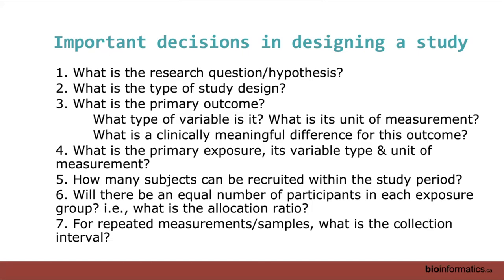What is your primary exposure? Is it just the microbiome composition, or is it diversity, or is it some sort of cluster? We'll talk about that in the sample size calculation section. Of course, you want to know how many subjects you need to recruit on the basis of your sample size. Realistically, can you recruit? And if you've got groups, do you want an equal number of people in each group, and if you're taking more than one sample, what is the collection interval?